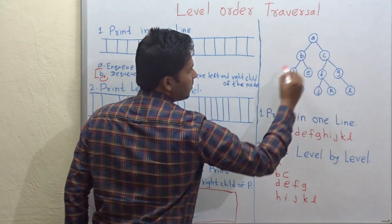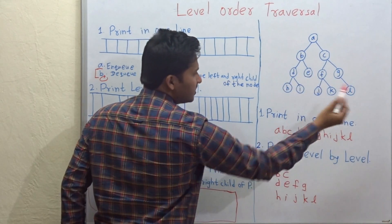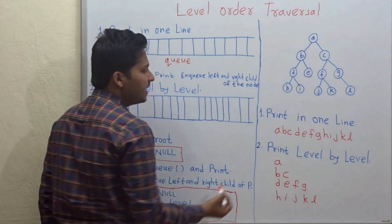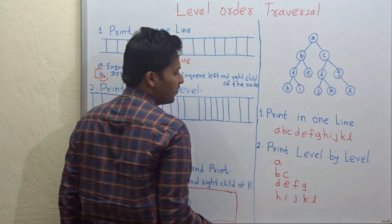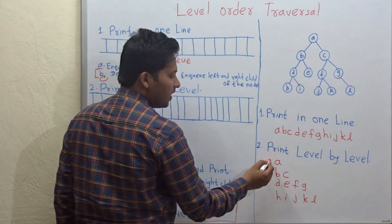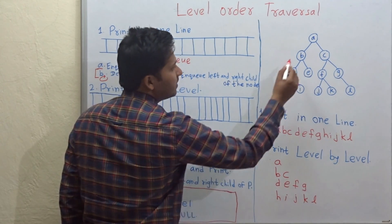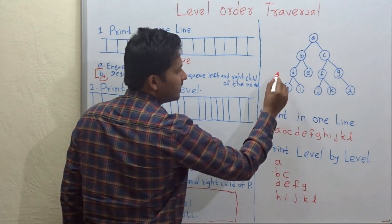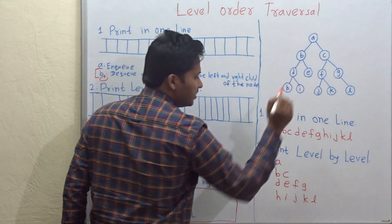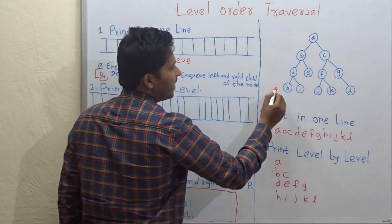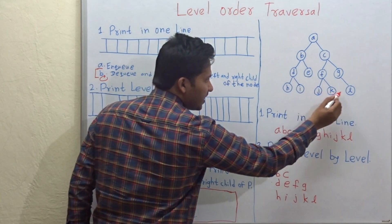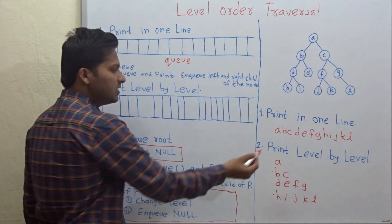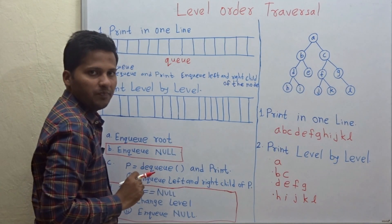We have written all the levels in one line. The second way is printing level by level. A is the first level, then B and C is the second level, then D, E, F, G is the third level, and H, I, J, K, L is the fourth level. So this is printing level by level.